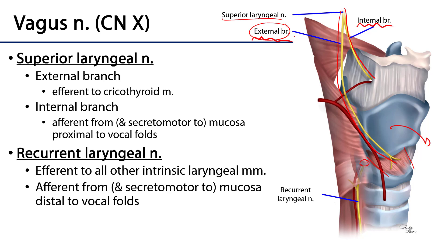The other contribution of the vagus nerve to the larynx comes by way of the recurrent laryngeal nerve. The recurrent laryngeal nerves branch from the vagus. On the right side, the recurrent laryngeal nerve wraps around the subclavian artery at the root of the neck. On the left side, it wraps around the concavity of the aorta. On both sides, they ascend the neck in the tracheoesophageal groove, paired with the inferior laryngeal artery.